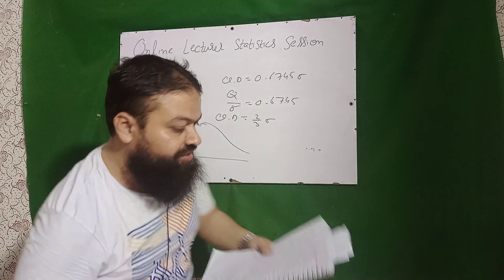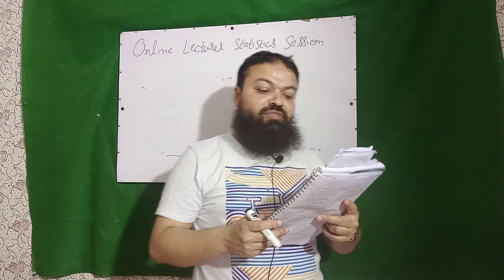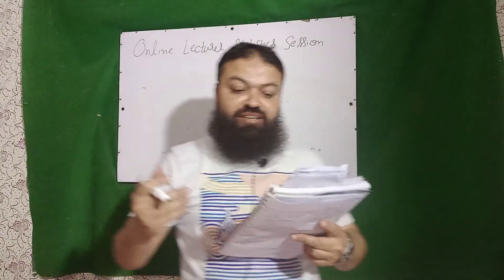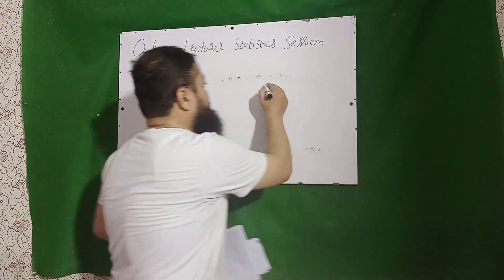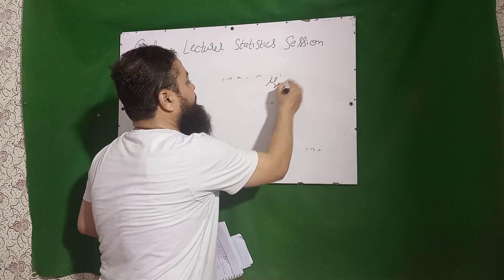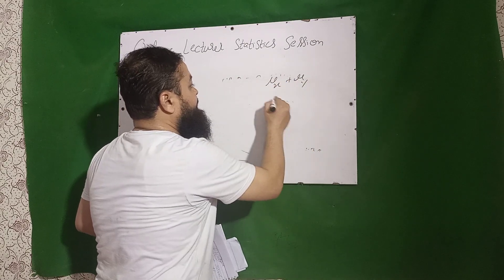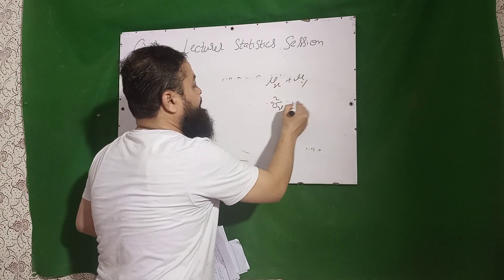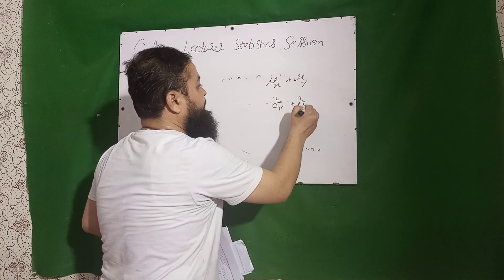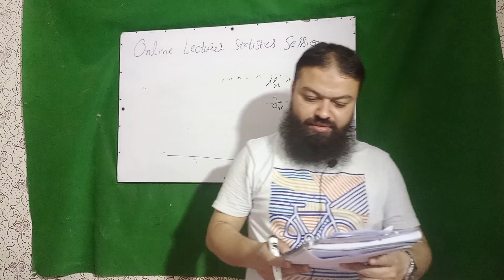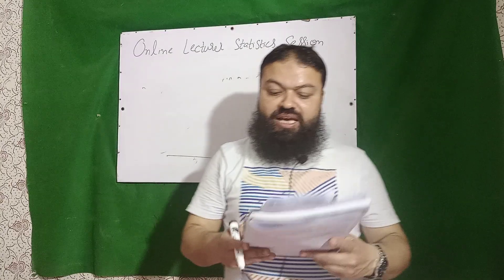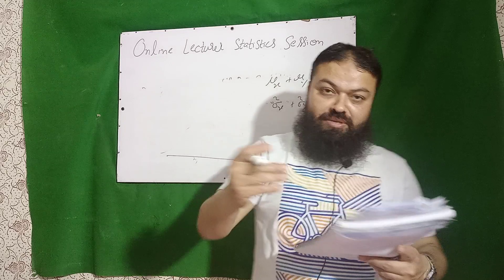Next question: for two normal variables X and Y, the mean of their sum is mu_X plus mu_Y, and the variance of their sum is variance of X plus variance of Y.